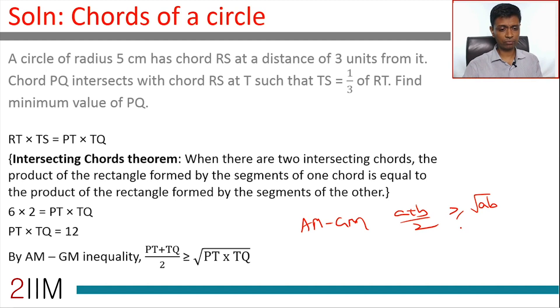This works only when A and B are strictly positive, which they are in this case - they're sides or components of a line segment. So PT plus TQ is greater than or equal to 2 times square root of PT into TQ.